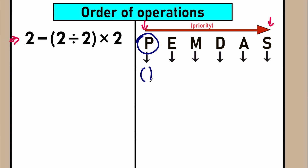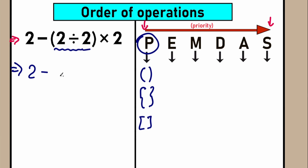The letter P stands for parentheses — this type of brackets, or squiggly brackets in some countries. Parentheses have the highest priority. Let's evaluate the expression inside parentheses first. Let's scan our question for parentheses. Yeah, we have parentheses right here. So we need to evaluate the expression inside parentheses first. As a result, we have the same beginning: 2 minus, then inside parentheses 2 divided by 2 equals 1, and we have times 2. After the first step, we complete the parentheses part.